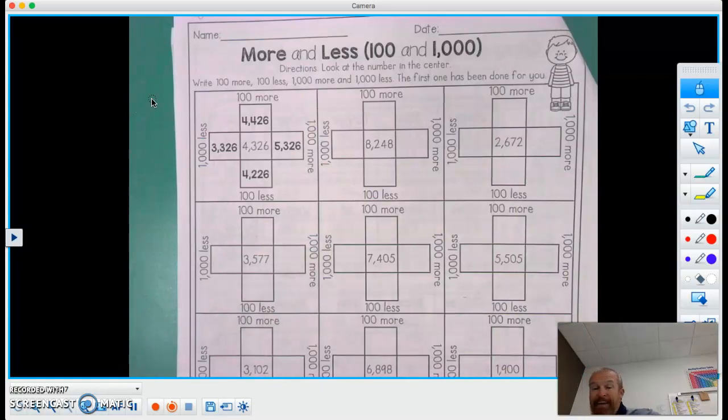All right, boys and girls, here we are. We have page 13 of your fall math box package. So we're going to be doing the more and less 100 and 1,000 more or less than the number that's in the middle of the box.